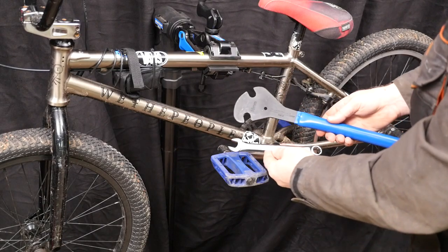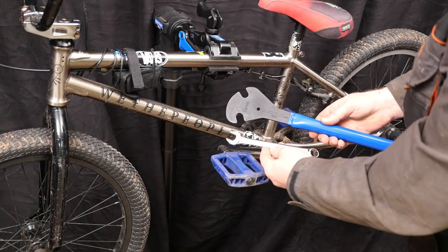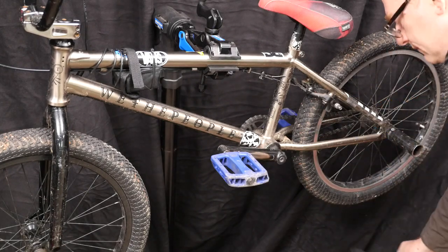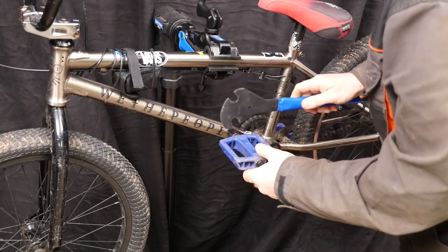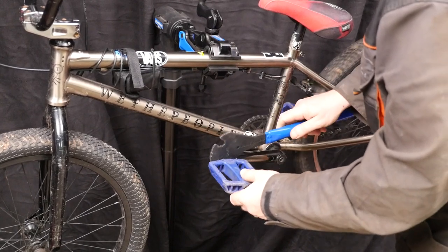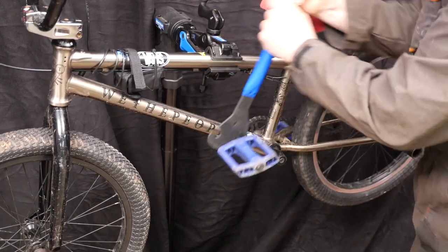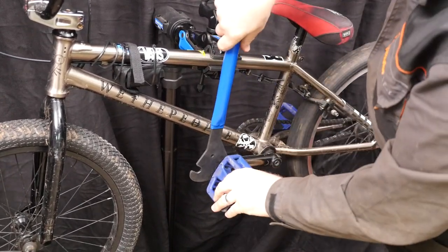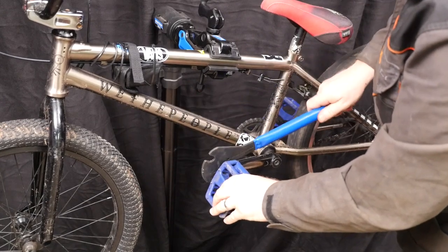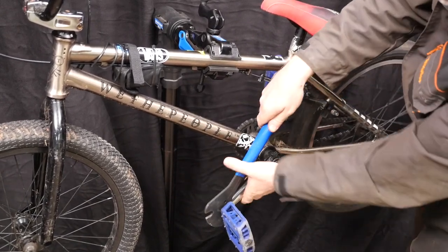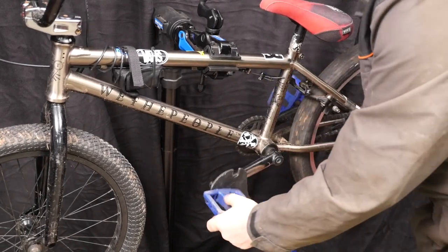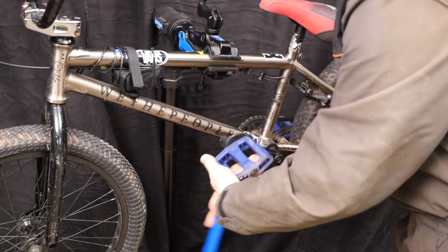So on these pedals they're undone using a 15mm spanner. Now you can either use a standard mechanic spanner or a cycle spanner. Also note the position to put the spanner. If you put it like this you won't get any leverage, but if you keep a low angle near to the crank you can easily squeeze those two together and there's your leverage.